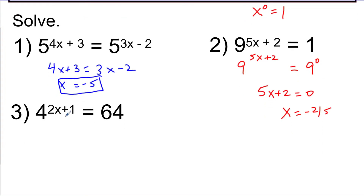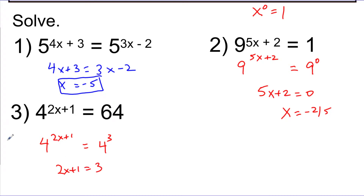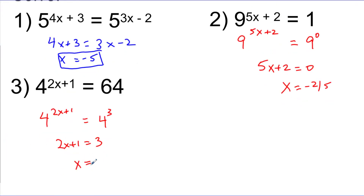The last straightforward problem: 4 to the 2x plus 1 equals 64. This is already base 4, and I can write 64 in exponential form with base 4 as well — it's 4 to the 3rd power. Now that both sides have a base of 4, I can say 2x plus 1 has to equal 3. Solving that gives x equals 1.